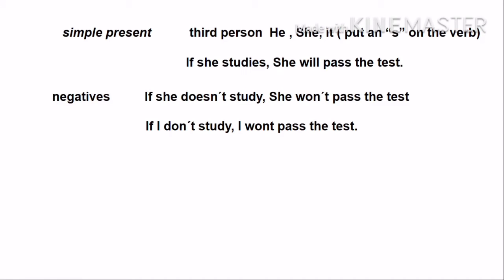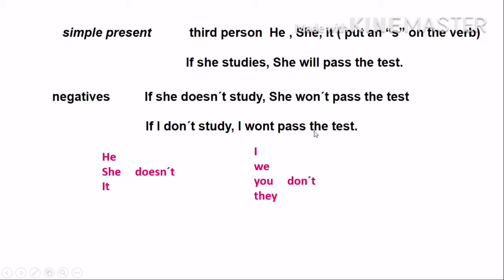Another thing is negatives. Negatives have to go with the auxiliaries 'doesn't' and 'don't'. If she doesn't study, she won't pass the test. Remember that the future with 'will' — if I want to make it negative, I just put 'won't'. But for simple present, I have to be careful: he, she, and it go with 'doesn't'; I, we, you, and they go with 'don't'. If I don't study, I won't pass the test. All pronouns go with 'won't' for the future, but for simple present, be careful with 'doesn't' and 'don't'.